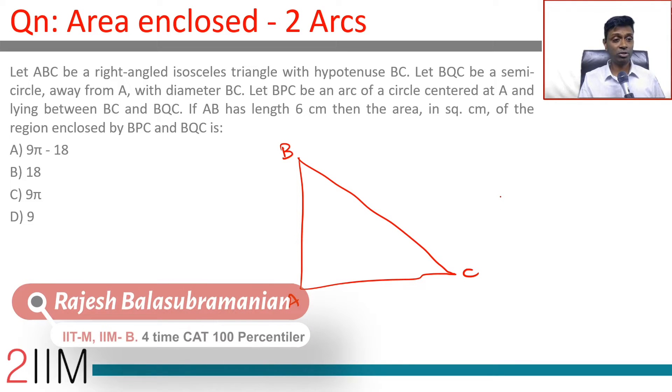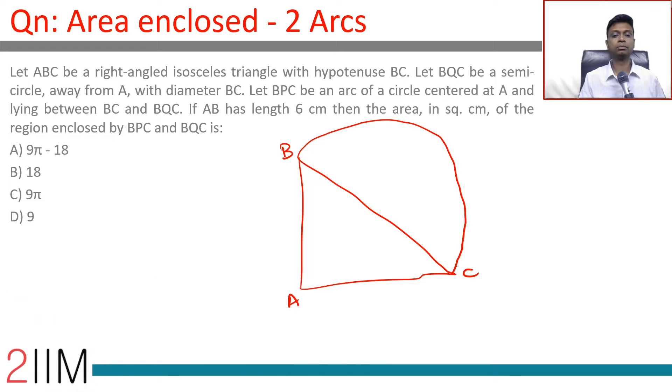Let BQC be a semicircle away from A with diameter BC. The other semicircle would have passed through A because of the right angle. Let BPC be an arc of a circle centered at A and lying between BC and BQC. If AB has length 6 centimeters.